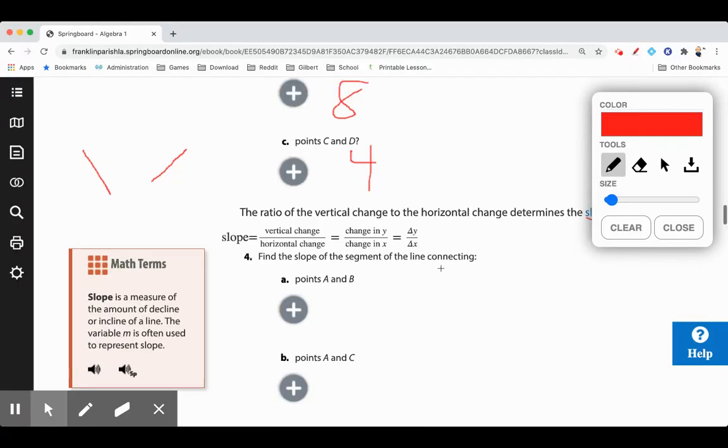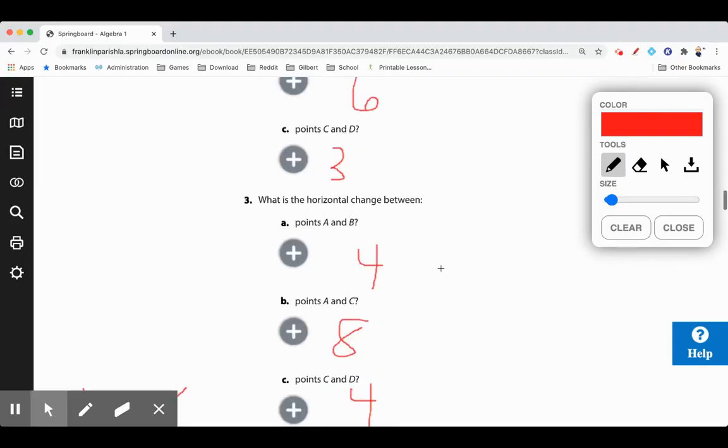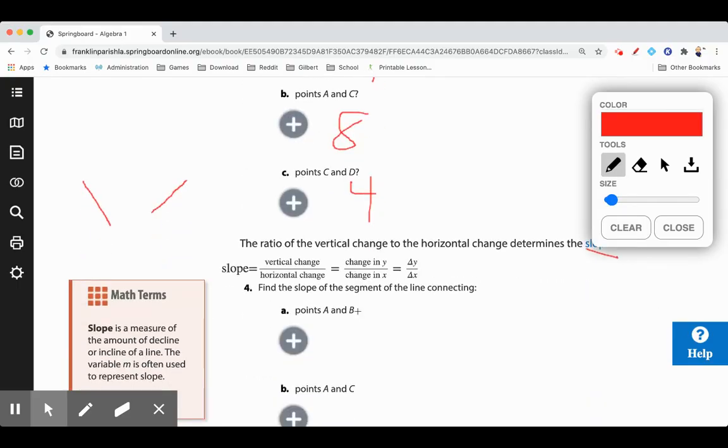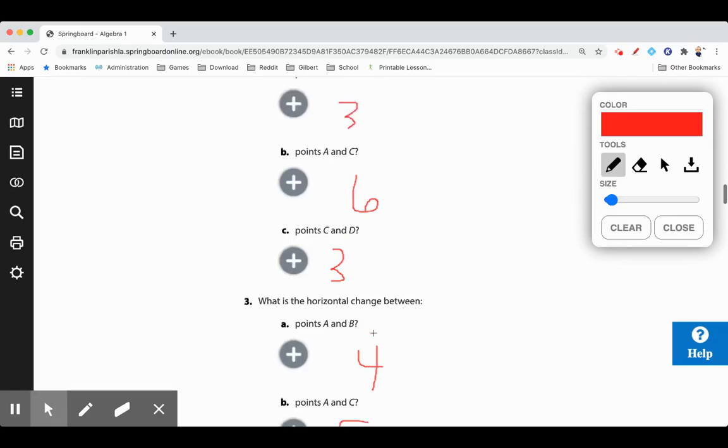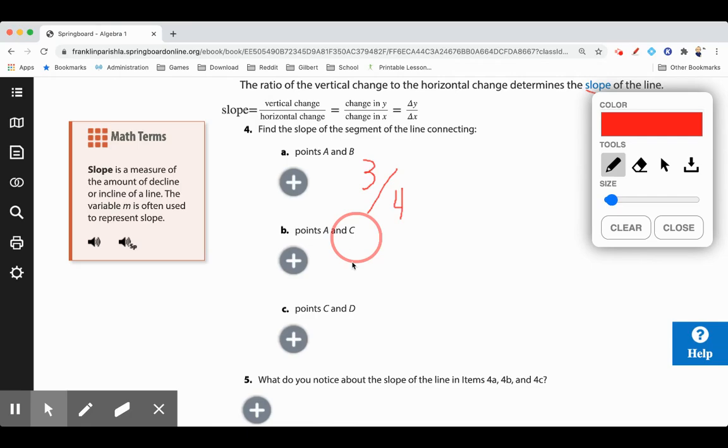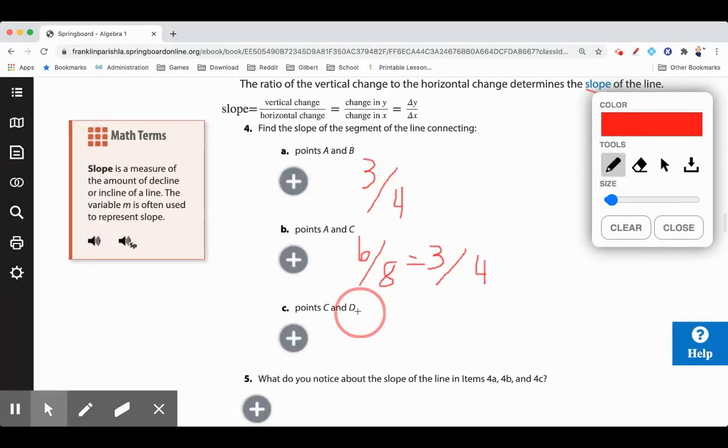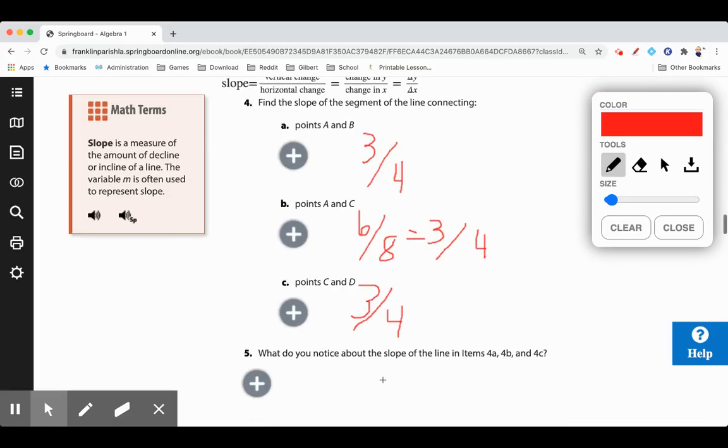So if we want to find the slope for the segment connecting A and B, we have 3 and 4. Vertically 3, horizontally 4. So 3 over 4 is our slope for A and B. A and C, we have 6 going up and down over 8 going left and right. 6 over 8, which you'll notice reduces to 3 fourths. Then points C and D, it's 3 over 4 again. They're all points on the same line. And their slope is the same.